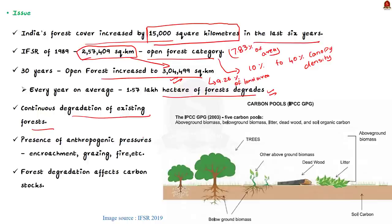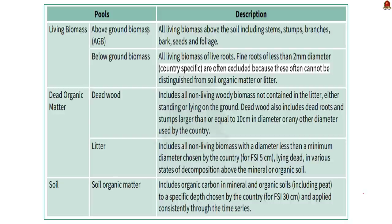This degradation highlights the presence of anthropogenic pressures including encroachment, grazing, and fire. Thus India is witnessing enormous degradation of forest and deforestation. This image shows the carbon pools — when forest degradation occurs, the carbon pools are also reduced, meaning carbon stocks are continuously getting reduced.